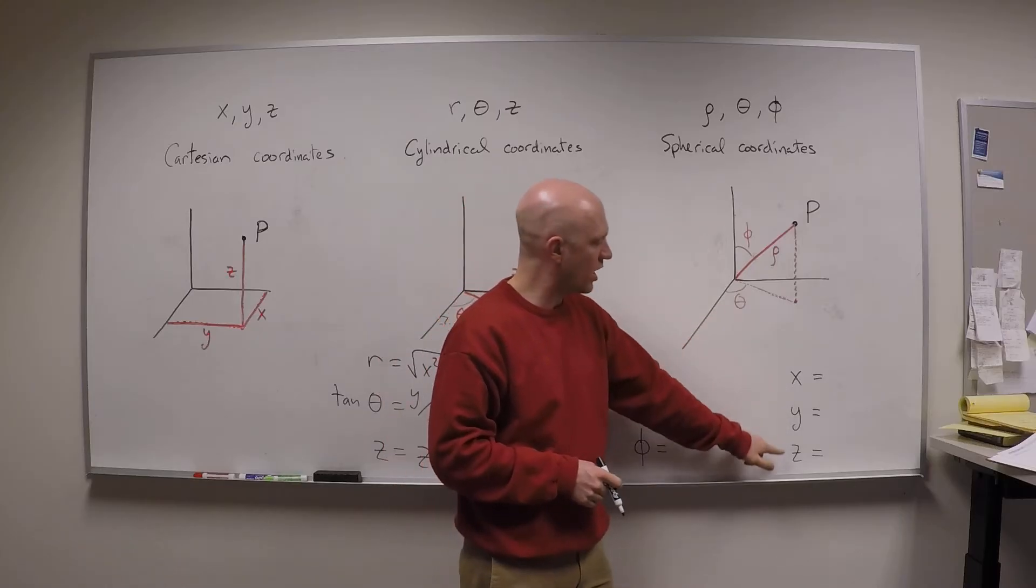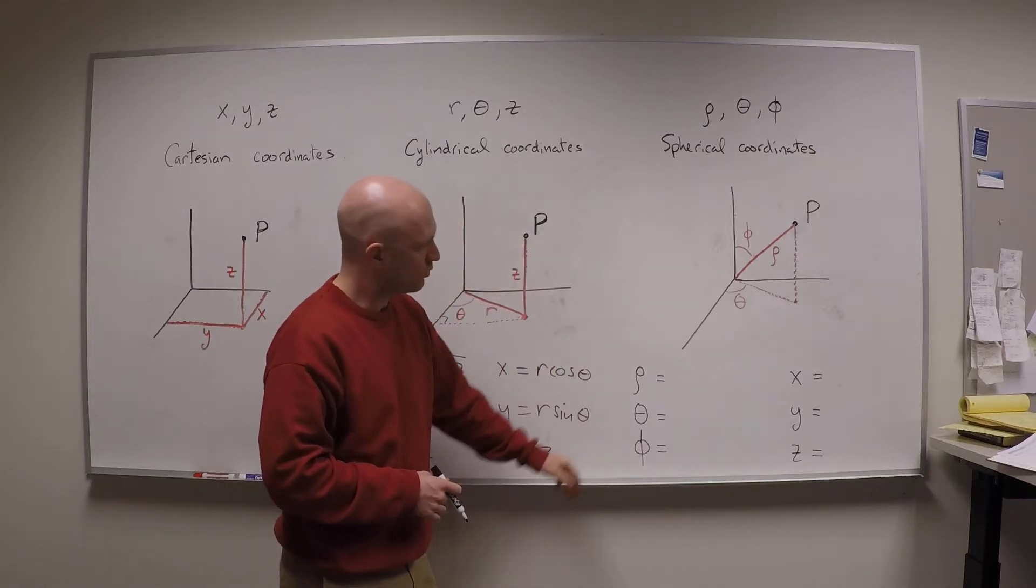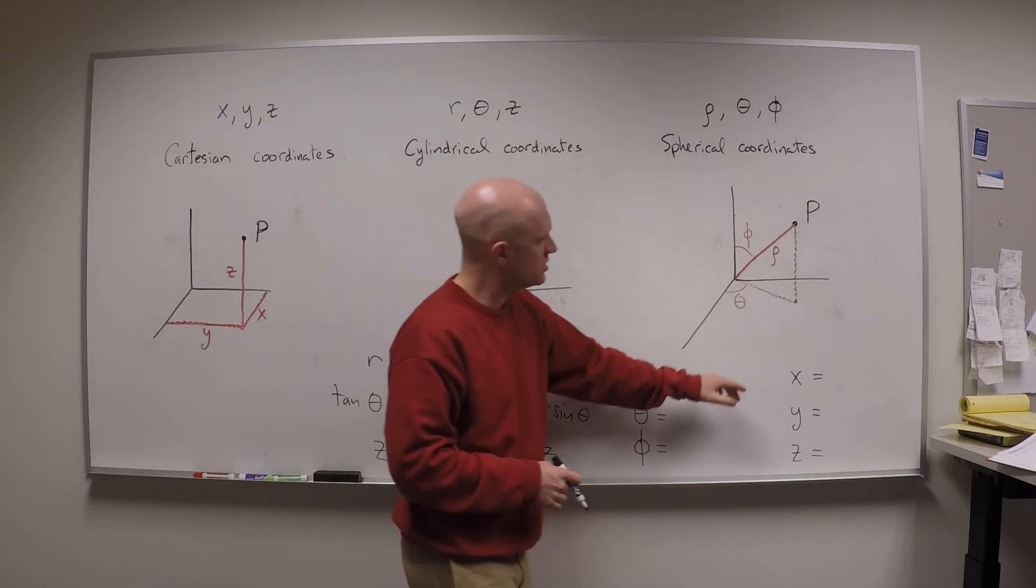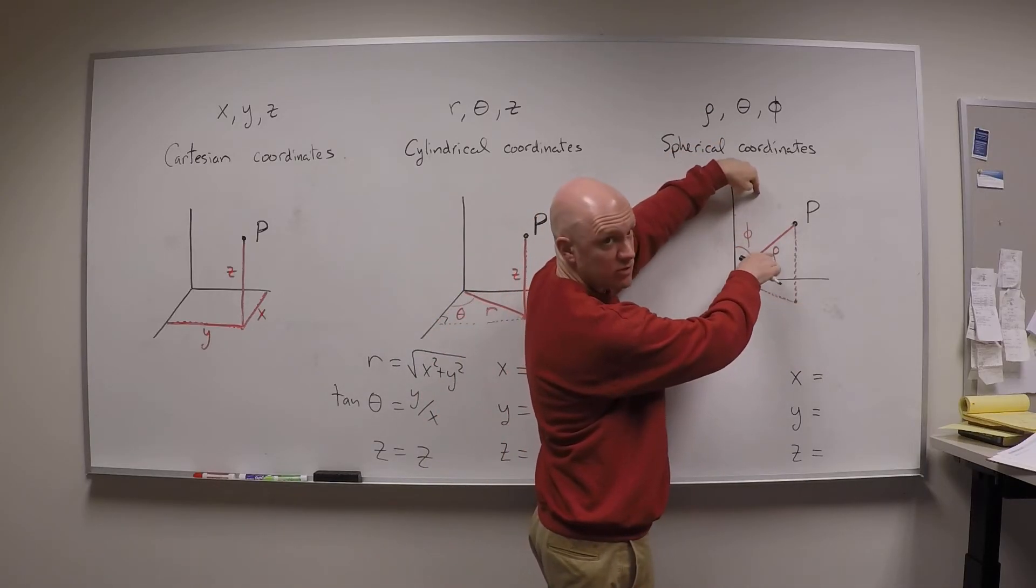Let's see if we can say what x, y, and z are in terms of rho, phi, and theta. So first of all, I think the easiest one to get is z. And the reason it's easiest to get z is z is this height right here. And because this angle right here is phi, I also have an angle of phi right here, because this makes two complementary angles right there along the same line.